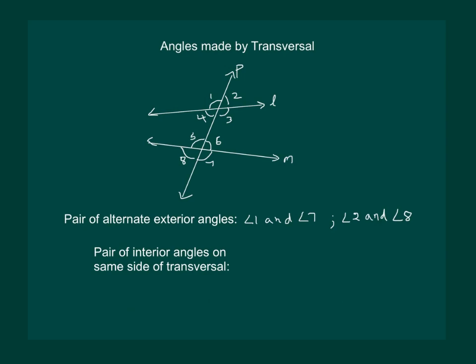And finally, we come to pair of interior angles on the same side of the transversal. So, the interior angles on the same side of transversal are angle 3 and 6. Also, another pair is angle 4 and angle 5.